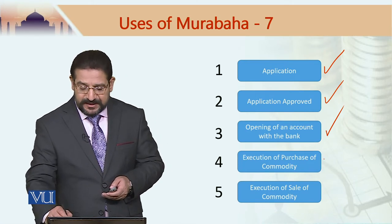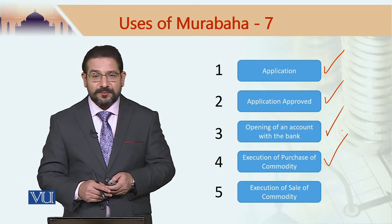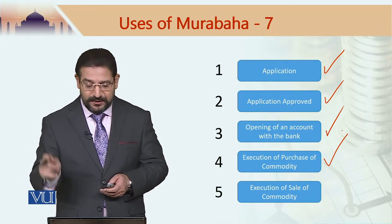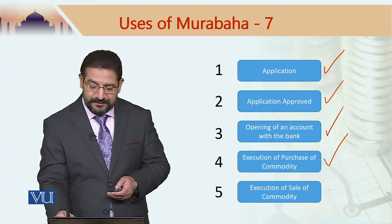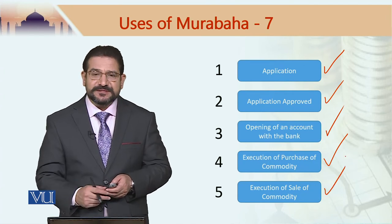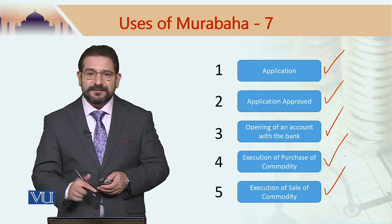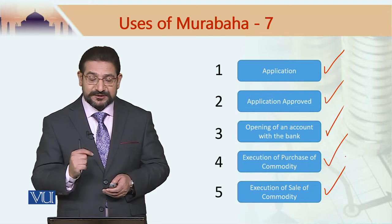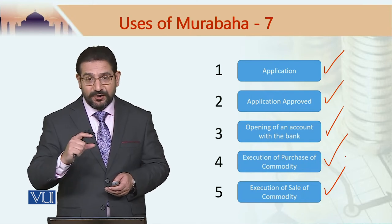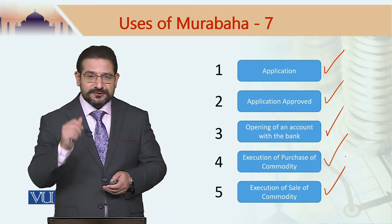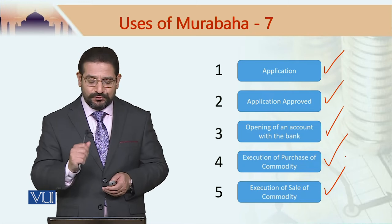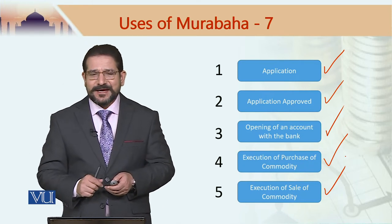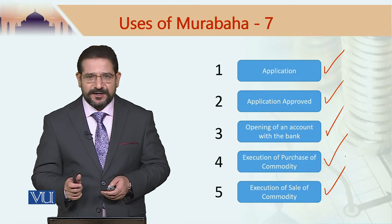Then there is the execution of the purchase of the commodity by the bank from the vendor, and the bank would then sell that commodity to the customer on a deferred payment basis. These steps — application, account opening, commodity purchase, and sale to customer — can take place very quickly.